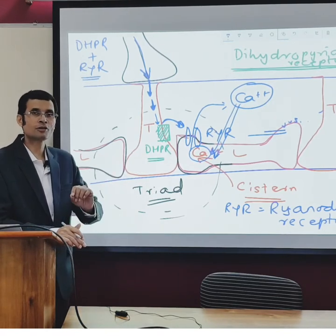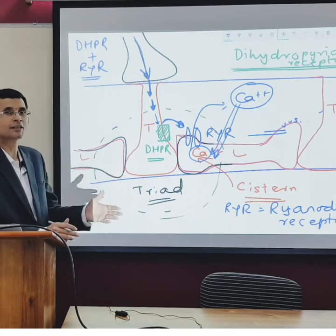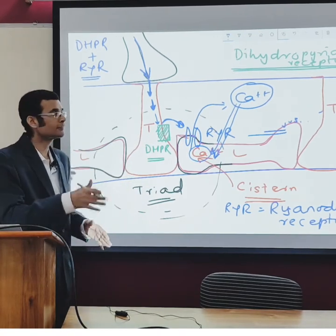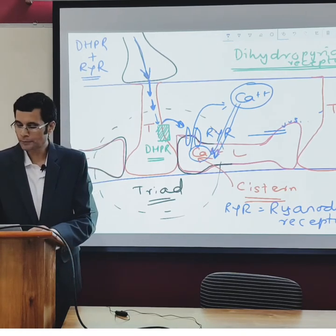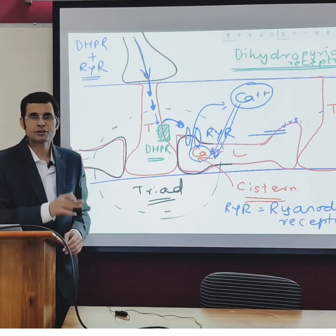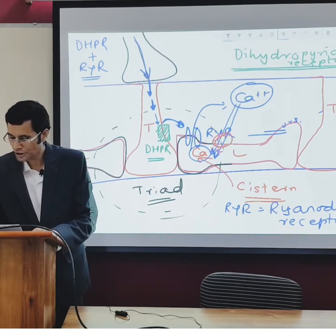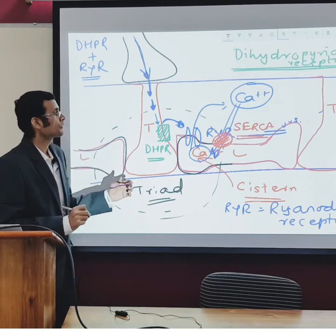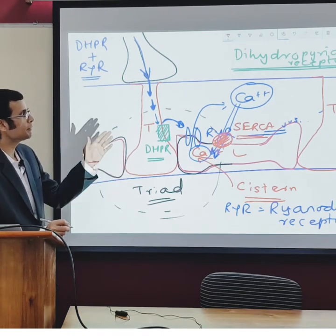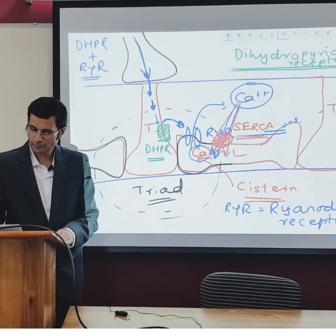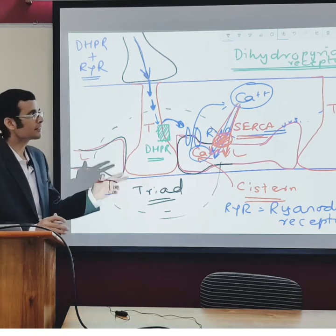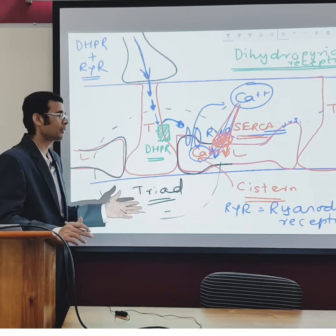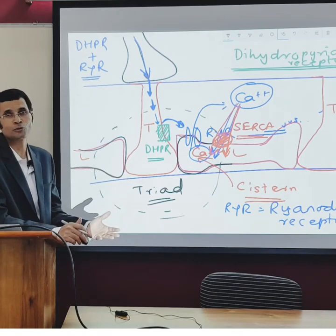Calcium removal from the sarcoplasm is an active process requiring ATP, so relaxation in that sense can also be called an active process. This is how the muscle contracts as a result of an electrical signal arriving into the muscle.